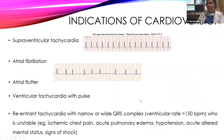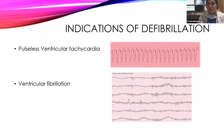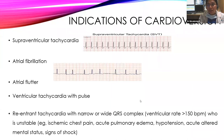Cardioversion is a synchronized shock delivered during the QRS complex or peak of R wave. Indications are supraventricular tachycardia, atrial fibrillation, atrial flutter, ventricular tachycardia with pulse, and reentrant tachycardia with narrow or wide QRS complex. In atrial fibrillation, the ECG shows an irregular rhythm with no P wave, and in SVT, you see a narrow QRS complex tachycardia. For all of these — AF, atrial flutter, SVT, and VT with pulse — we give only cardioversion.